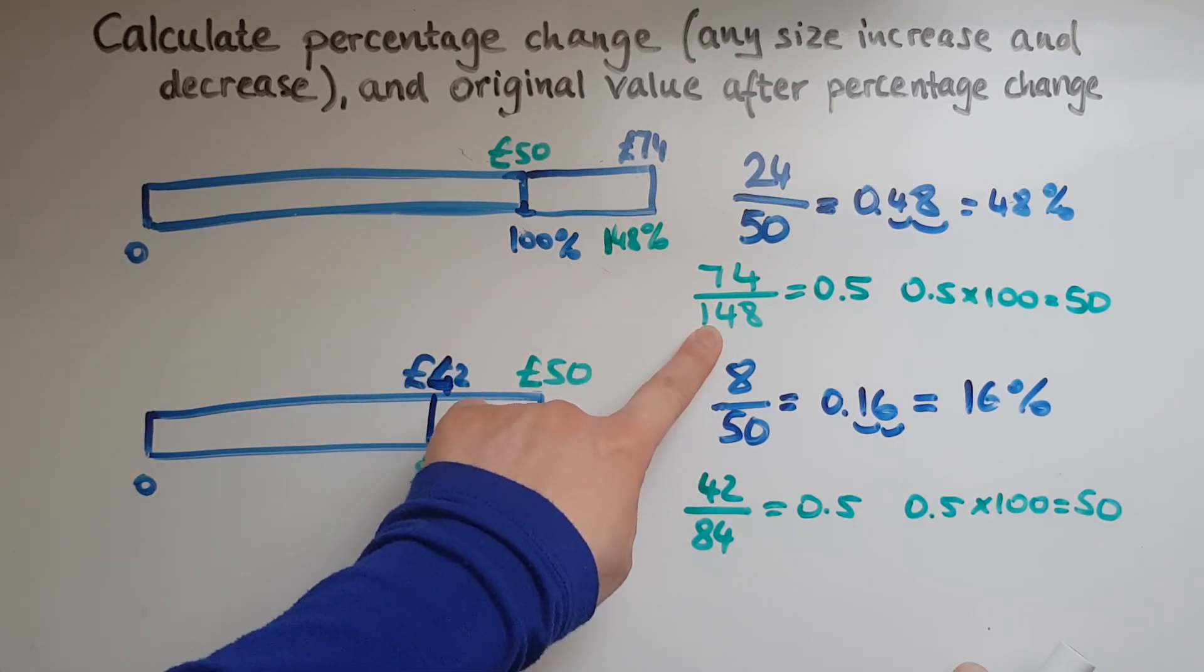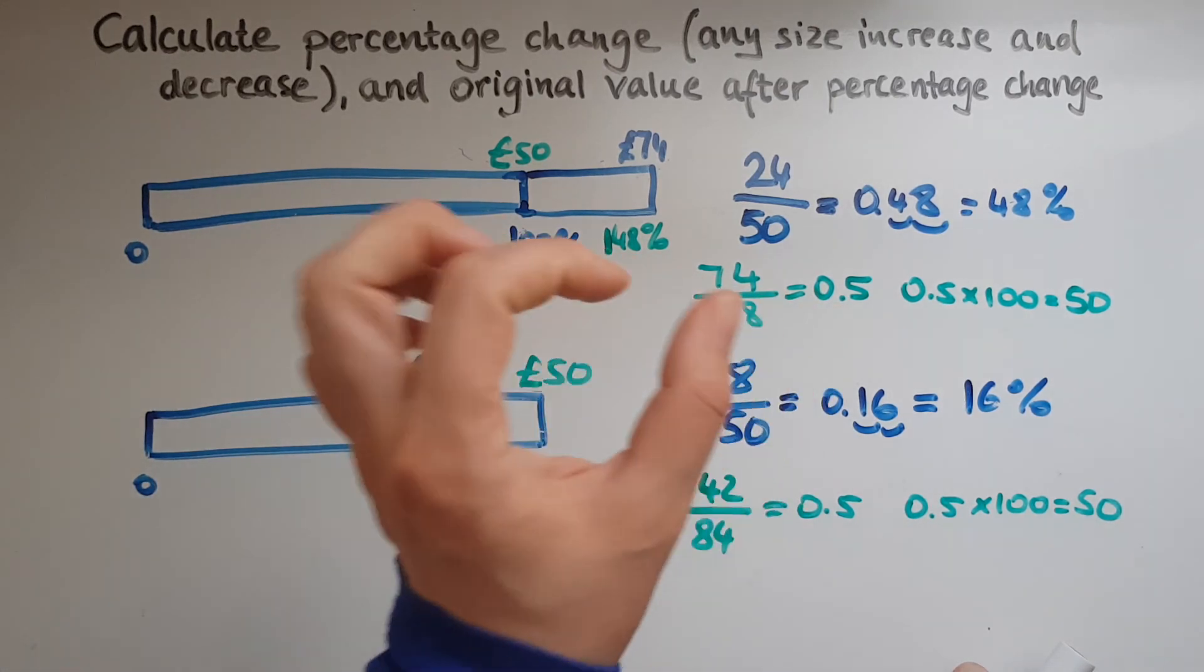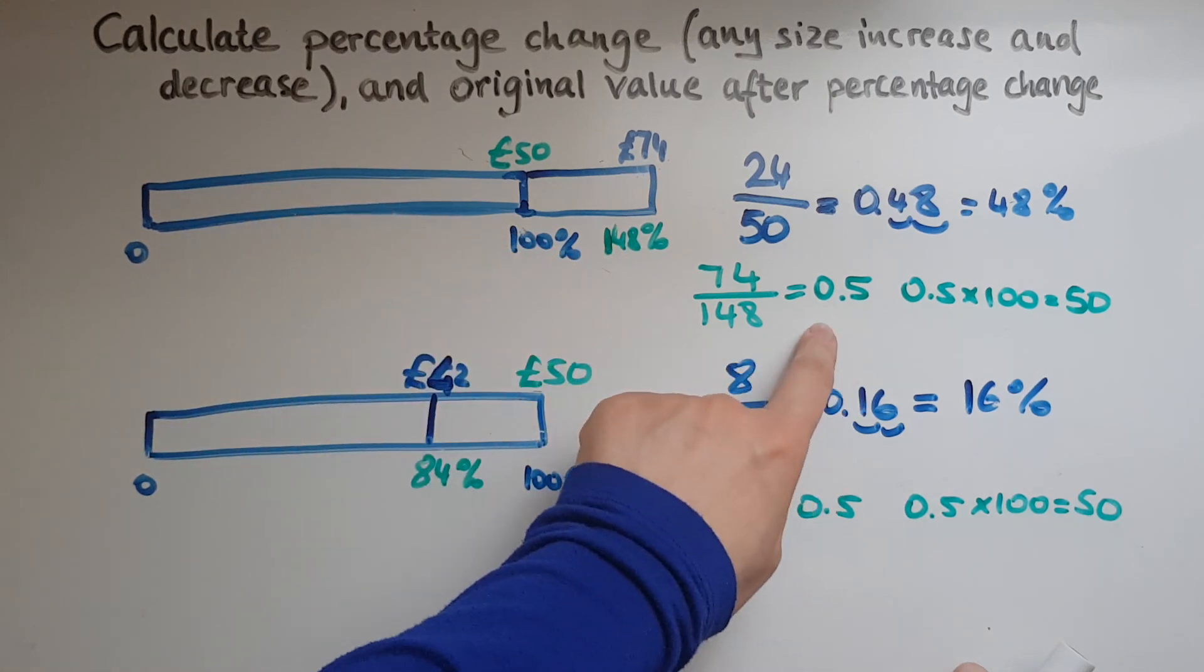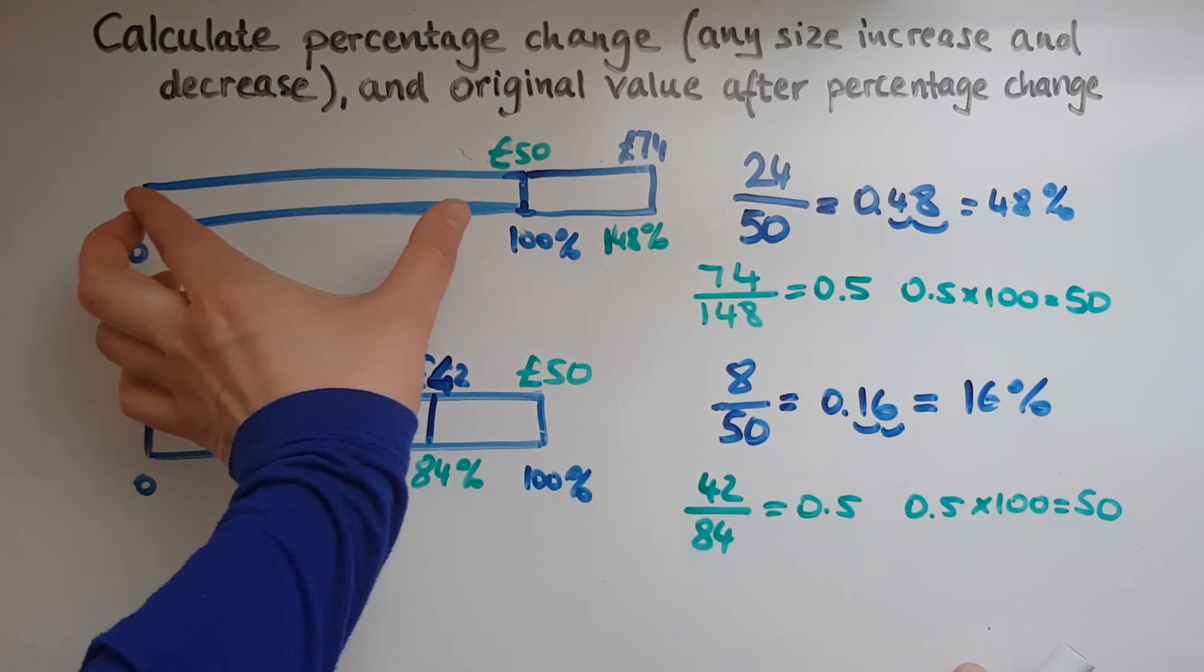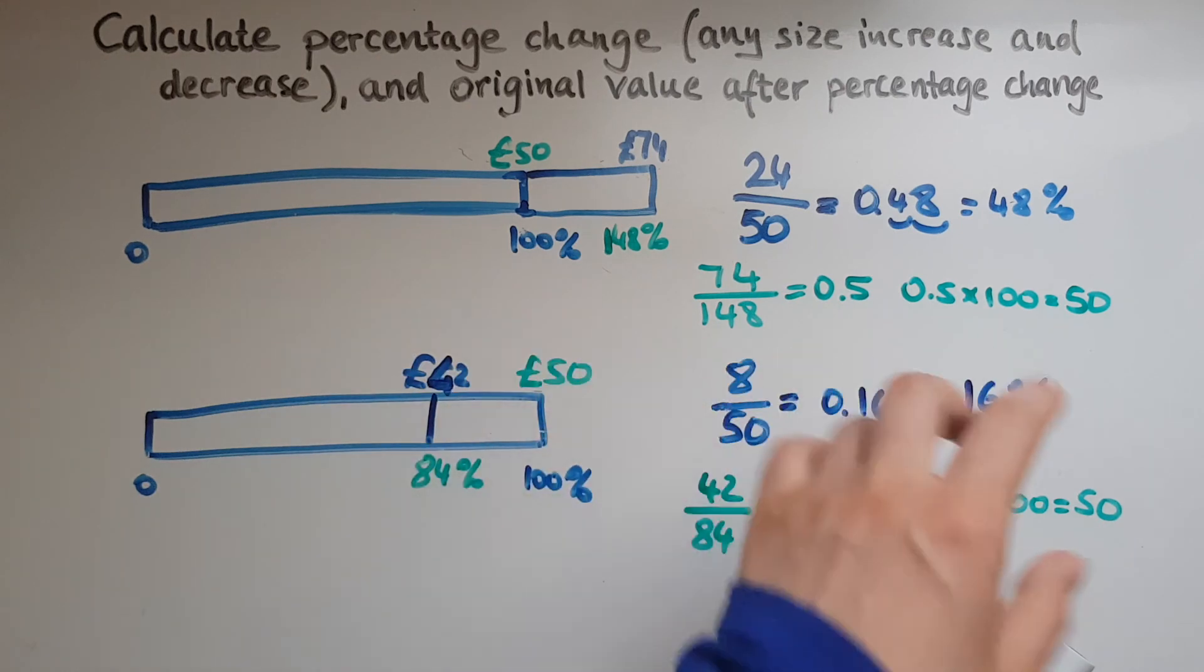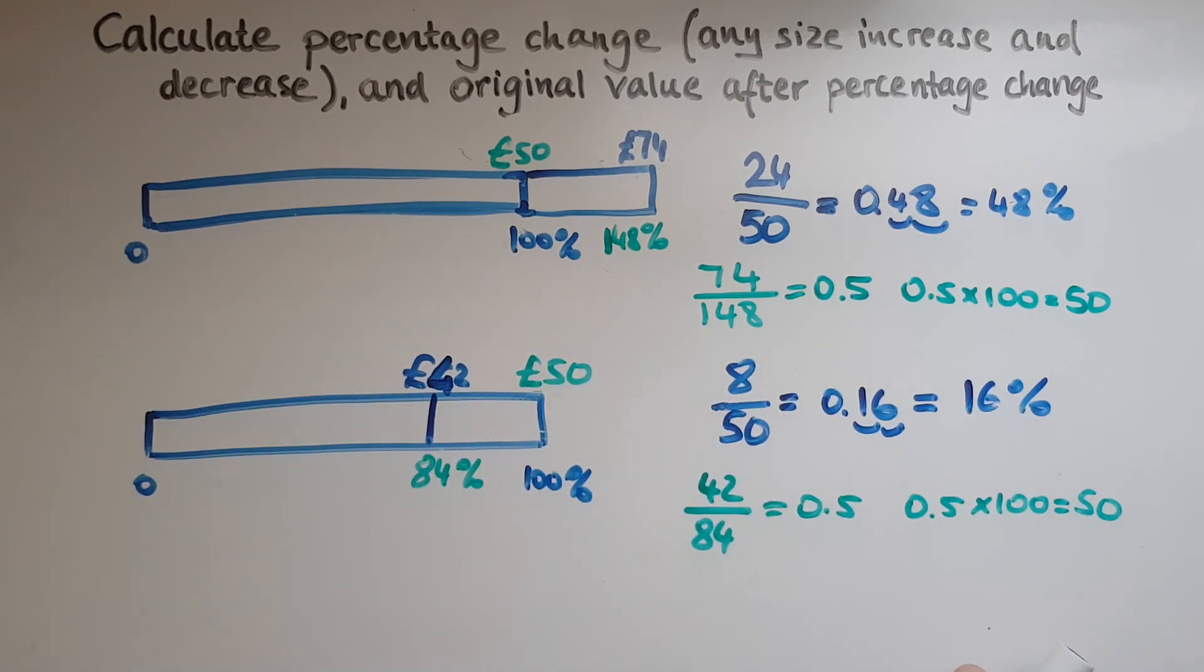That's what we did. And that gives you 1%. That 1% then scale it up or multiply it by 100 to give you the original value. And exactly the same thing over here.